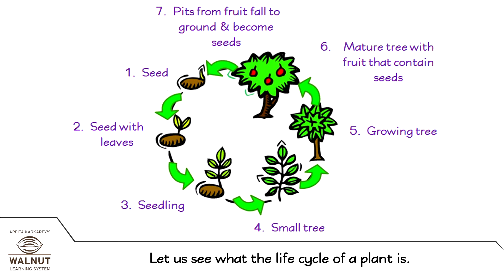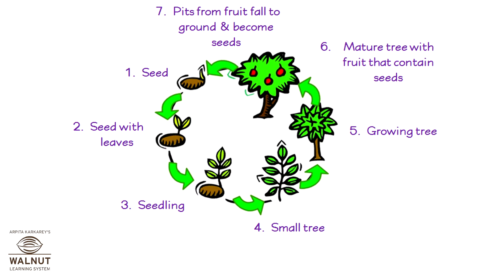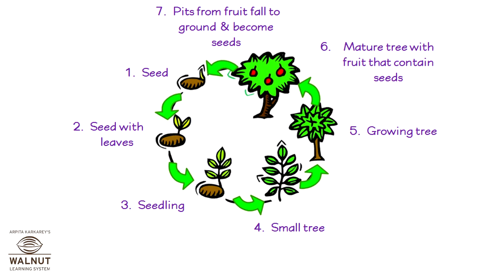Let us see what the life cycle of a plant is. First, it is a seed. Then it is a seed with leaves. Then comes a seedling. Then it becomes a small tree. Then it turns into a growing tree. Then comes a mature tree with fruit that contain seeds. Lastly, pits from fruit fall to the ground and become seeds.